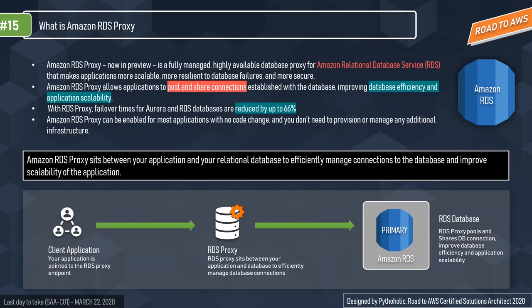The Amazon RDS Proxy instance maintains a pool of established connections to your RDS database instances, reducing the stress on database compute and memory resources that typically occurs when new connections are established. RDS Proxy is highly available and deployed over multiple availability zones, increasing application availability, reducing database failover times, and managing application data security with database access controls.